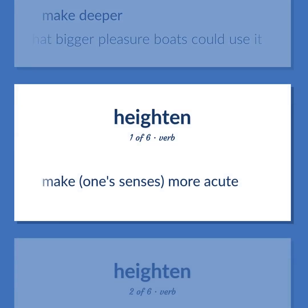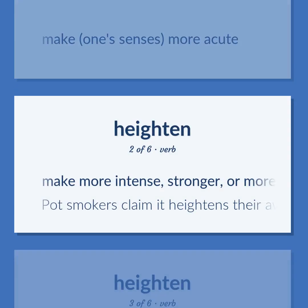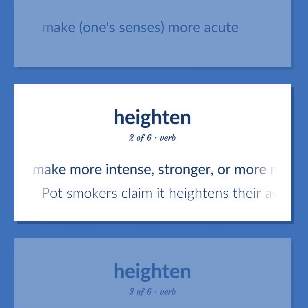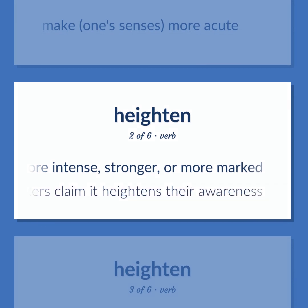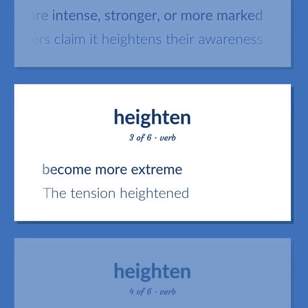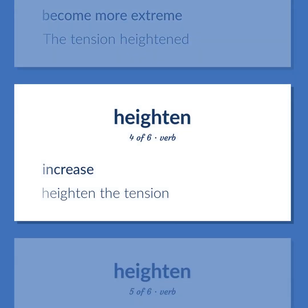Heighten: Make one's senses more acute. Make more intense, stronger, or more marked — pot smokers claim it heightens their awareness. Become more extreme — the tension heightened. Increase — heighten the tension.